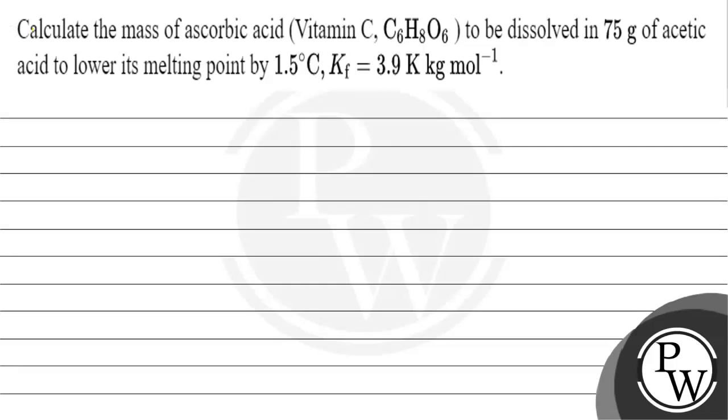Hello Bacho, let's read this question. The question says: calculate the mass of ascorbic acid to be dissolved in 75 grams of acetic acid to lower its melting point by 1.5 degrees Celsius. Kf is 3.9 Kelvin kilogram per mole.